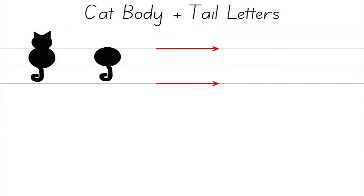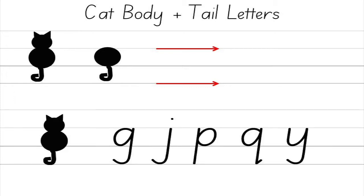Finally, cat body and tail letters include G, J, P, Q, and Y.